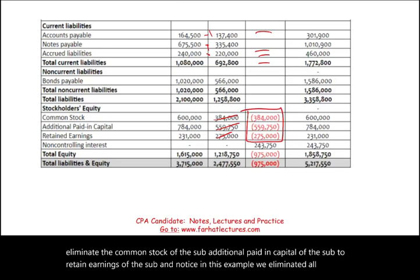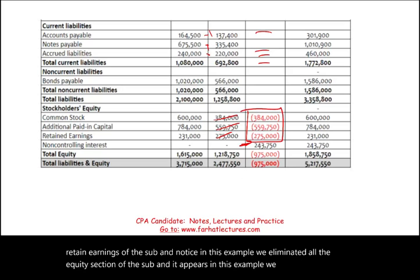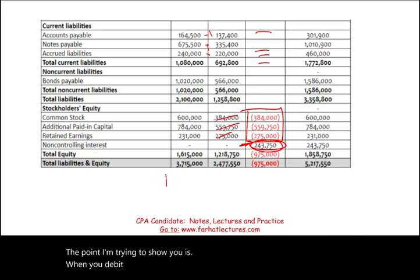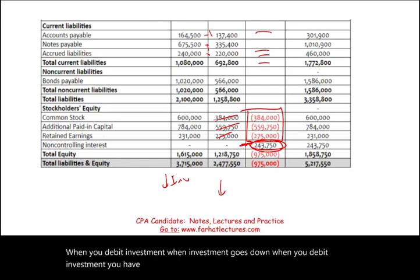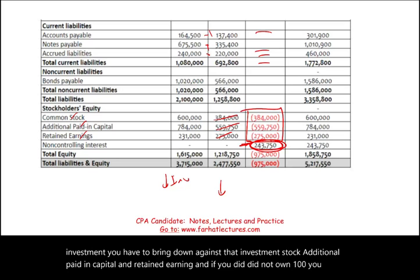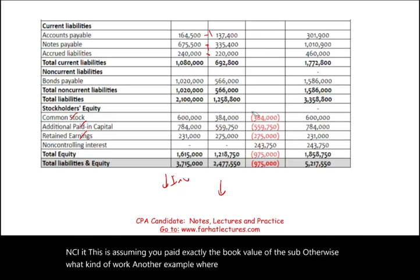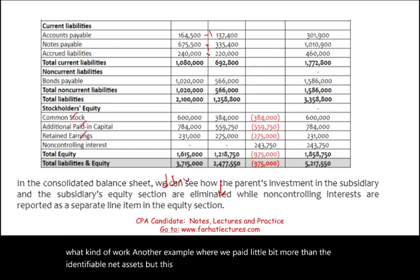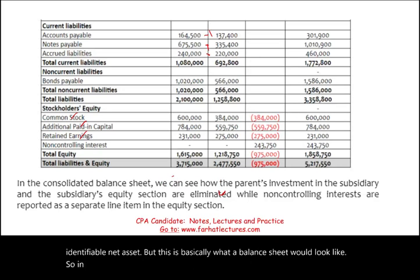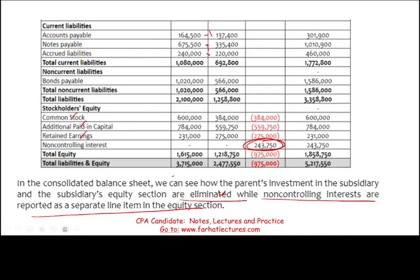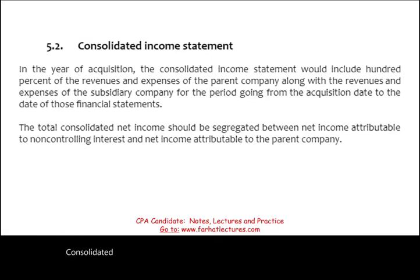In this example we don't own 100% of the company, so we created an NCI. When investment goes down — when you debit investment — you bring it down against common stock, additional paid-in capital, and retained earnings. If you did not own 100%, you remove NCI as well. This assumes you paid exactly book value; otherwise, we work another example where you paid more than the identifiable net assets.